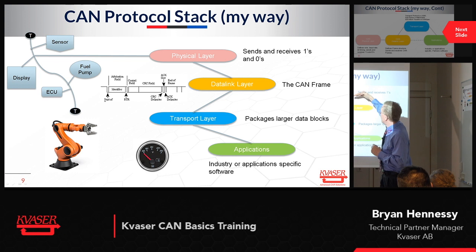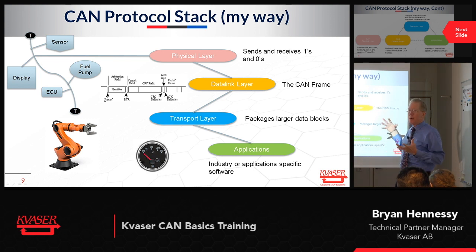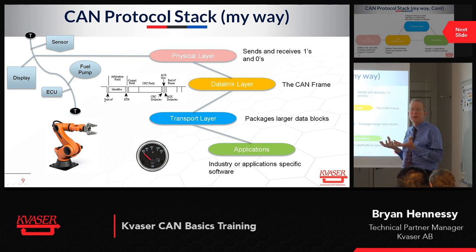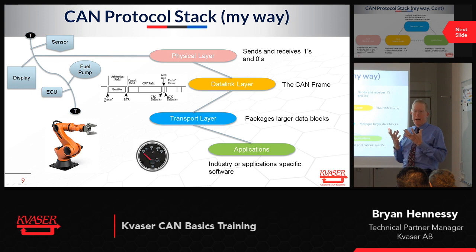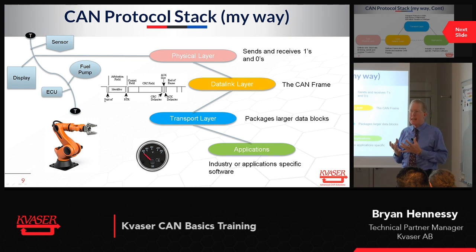From the physical layer, once you get the ones and zeros across the network, we have to understand how to break up and interpret what those ones and zeros represent. That's done via what we call the data link layer. The data link layer takes all of the ones and zeros that the physical layer can reliably send and packages them in an understandable format called a CAN frame. We'll get very extensively into a CAN frame and take it apart so you understand its different parts.